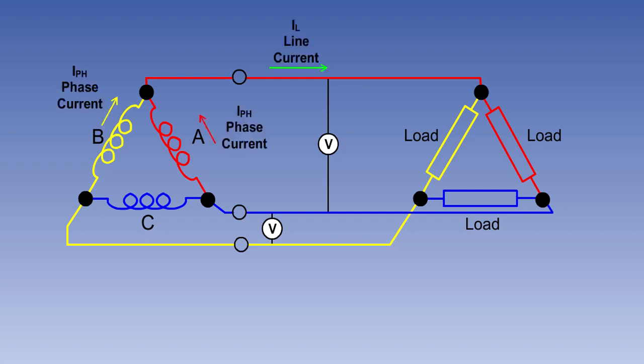However, because of the way the phases are connected, the line current will always be shared between the phases. And in this case, the line current will be root 3 times the phase current.